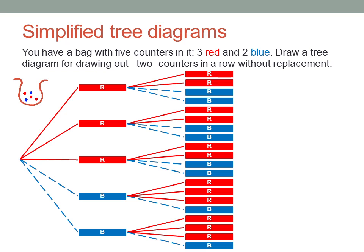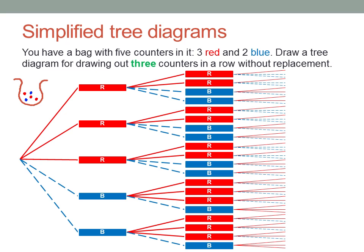And that's all well and good, but what if I asked you to extend the experiment to drawing out three counters in a row without replacement? Suddenly the tree becomes a bit large and unwieldy, doesn't it?